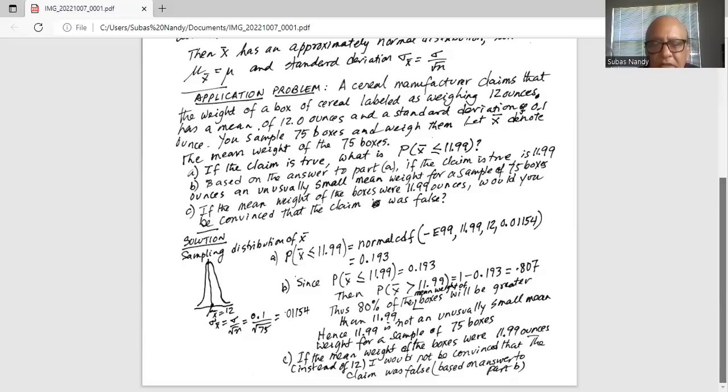If the mean weight of the boxes were 11.99 ounces instead of 12, I would not be convinced that the claim was false based on answer to part B because the probability of x sample mean greater than 11.99 is 0.807, which is a large probability value. Therefore, I will not be too concerned that the claim was false.